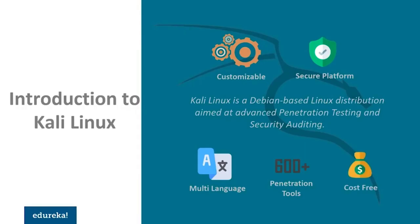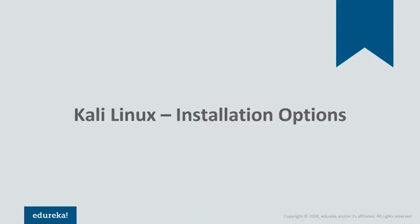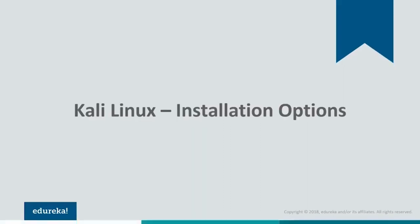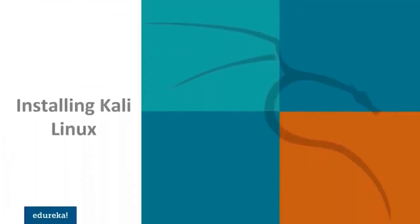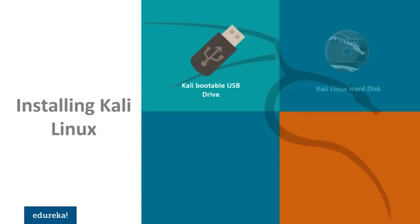On top of all these benefits, Kali Linux offers different installation options. One way of installing Kali Linux is by making a Kali bootable USB drive. This is the fastest way of installing Kali Linux and the most favorable as well. We will discuss why in a while.